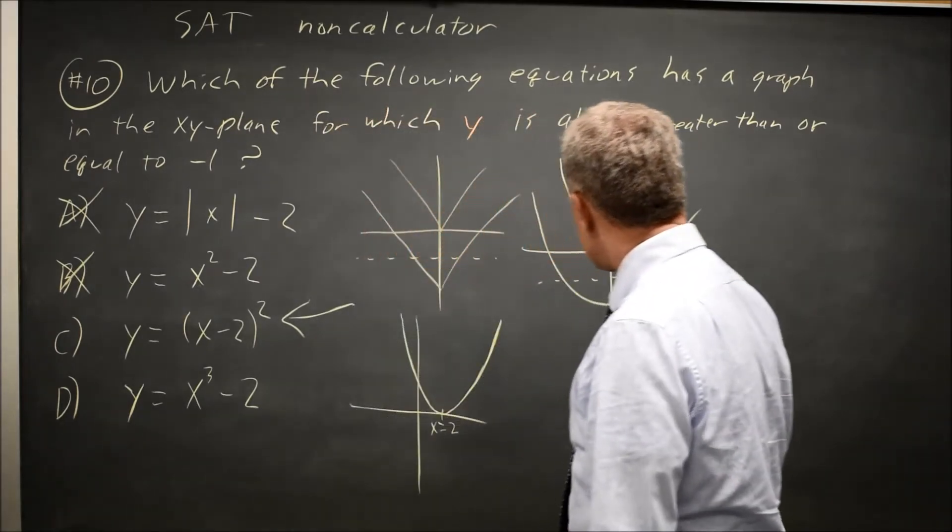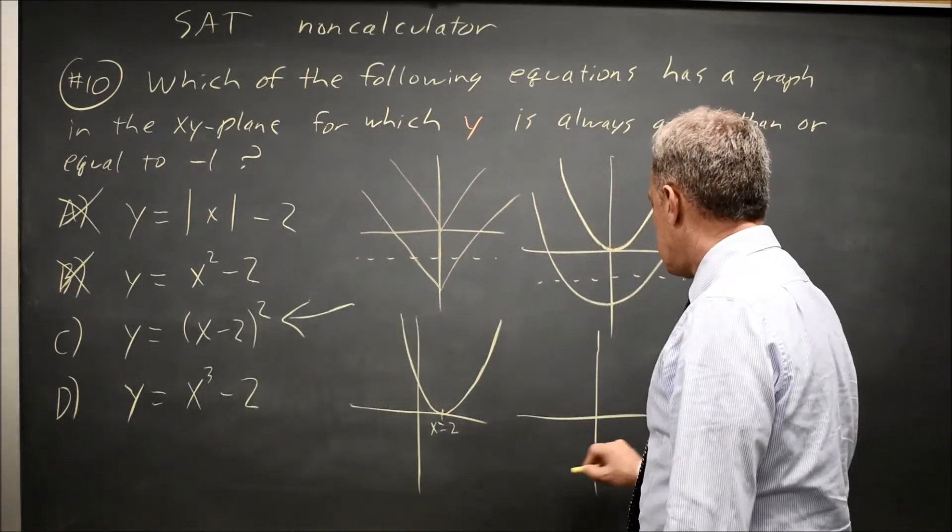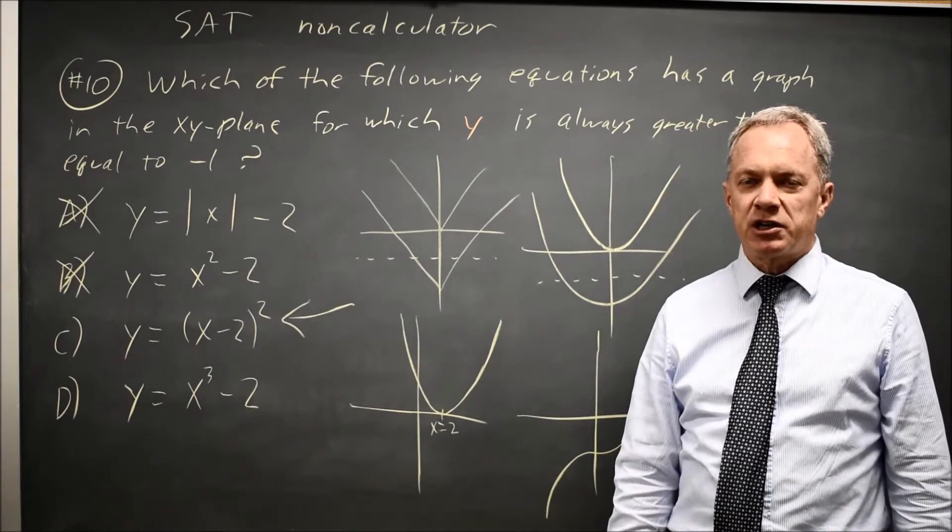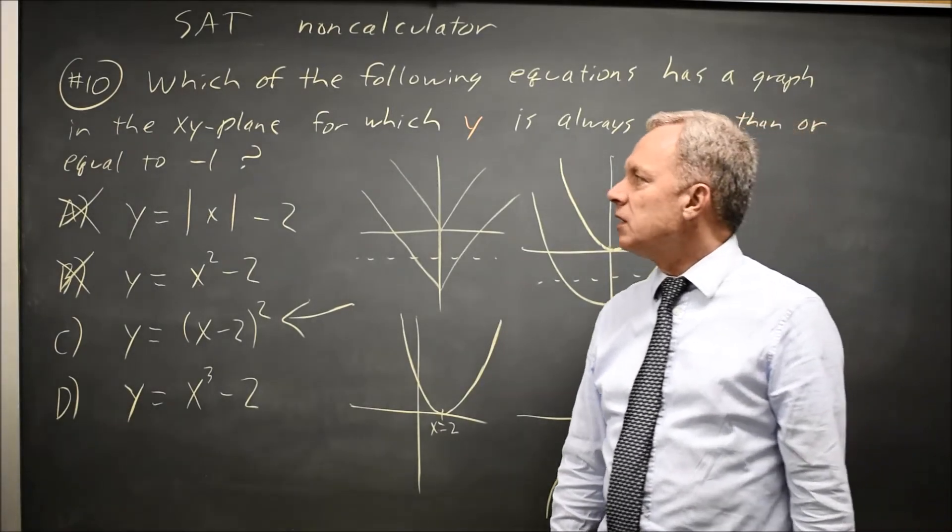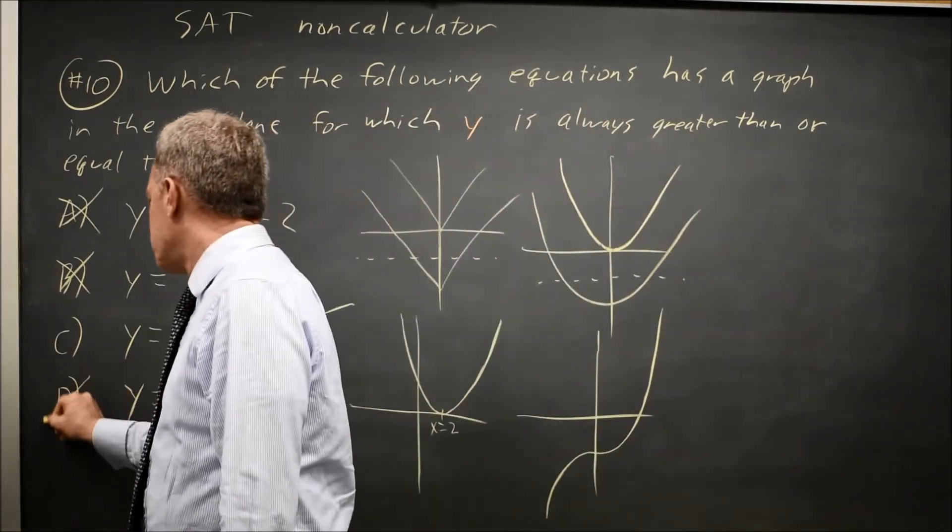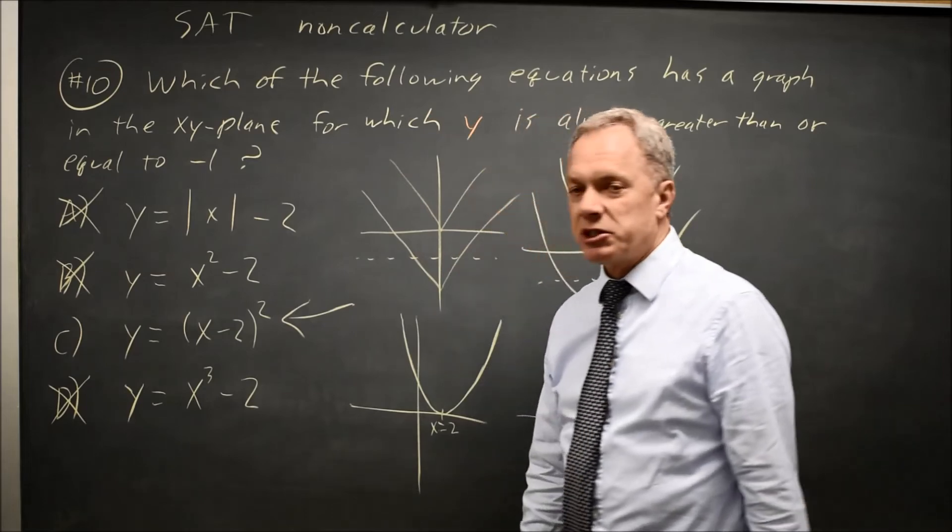Choice D is a cubic, which looks something like this. We know all cubics have range from negative infinity to positive infinity, so they have values that are less than negative 1, and our cubic does not work. The correct answer is choice C.